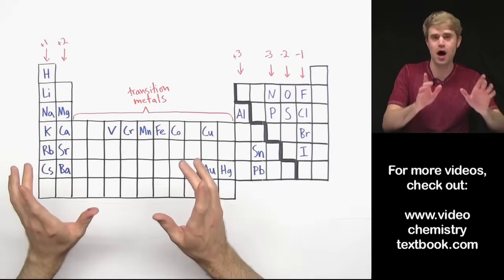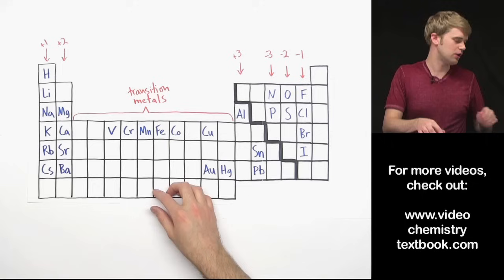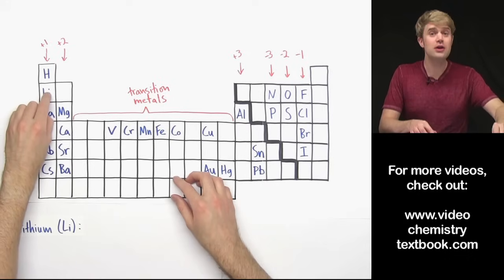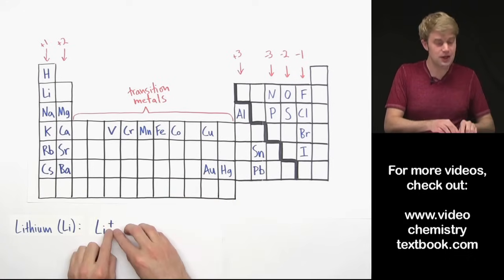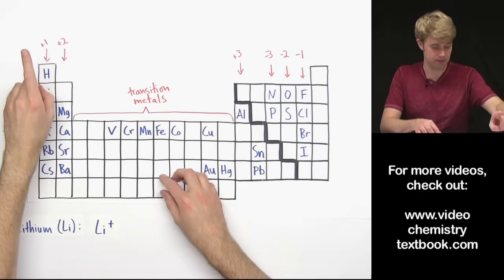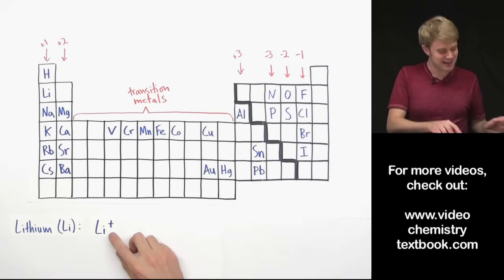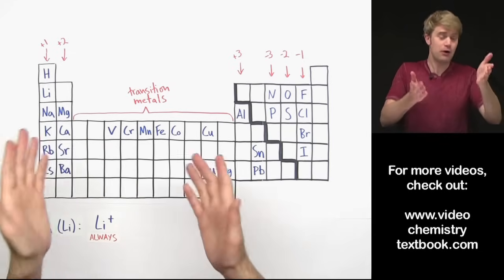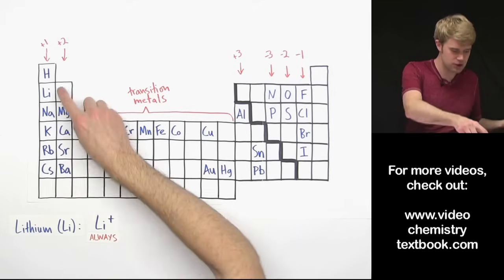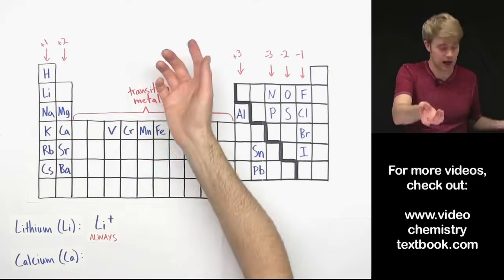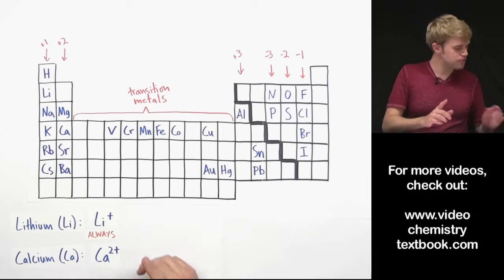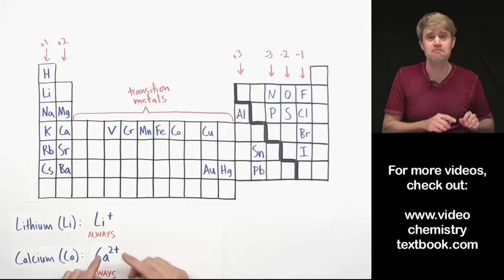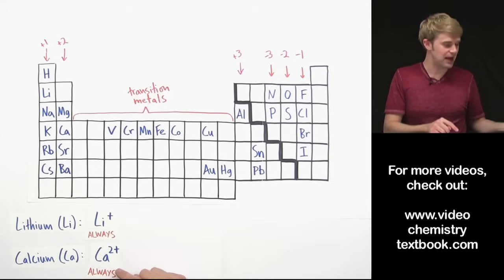Let's start by taking an example that's not a transition metal. We'll take lithium in this column here. When lithium forms an ion, we know that that ion is going to have a +1 charge. And that's because lithium is in this column. Every single ion that lithium makes is always going to be +1. We know that based on its location. Now, the same is true for calcium. Calcium is in this column here. So when calcium makes an ion, that ion will be Ca2+ and it will always, calcium will always make ions that are 2+. Every single calcium ion for the most part will be Ca2+.